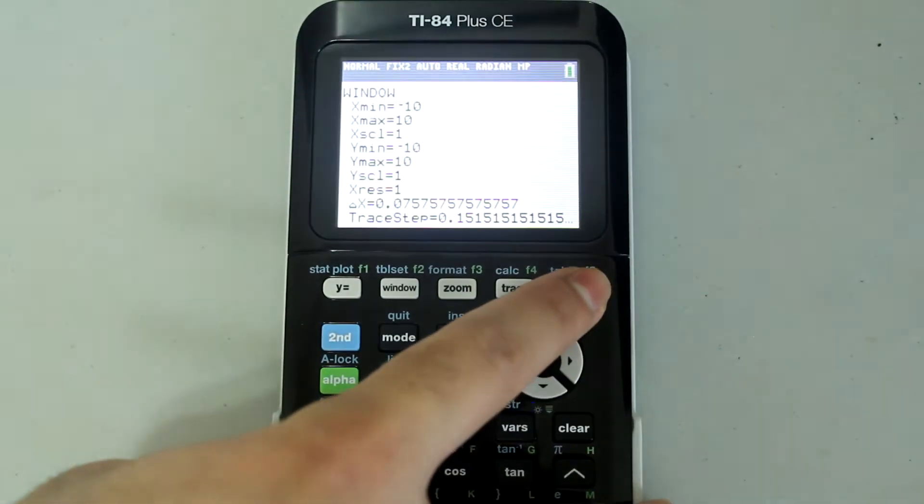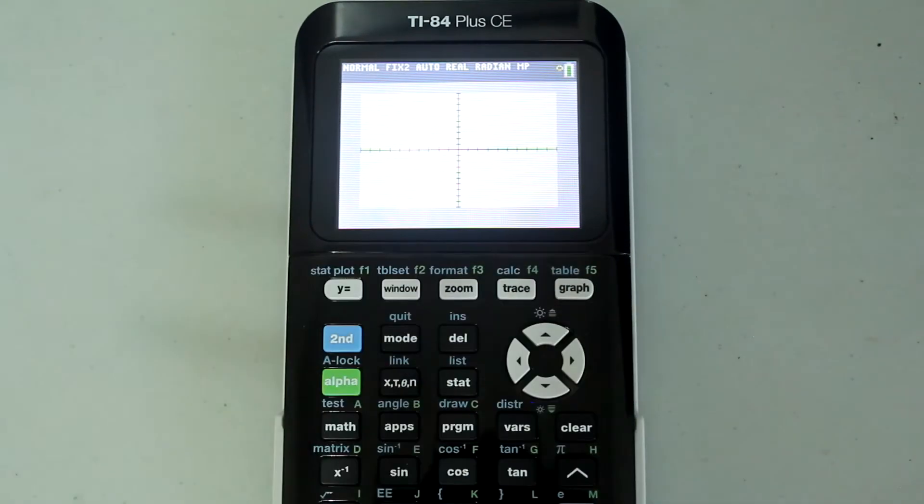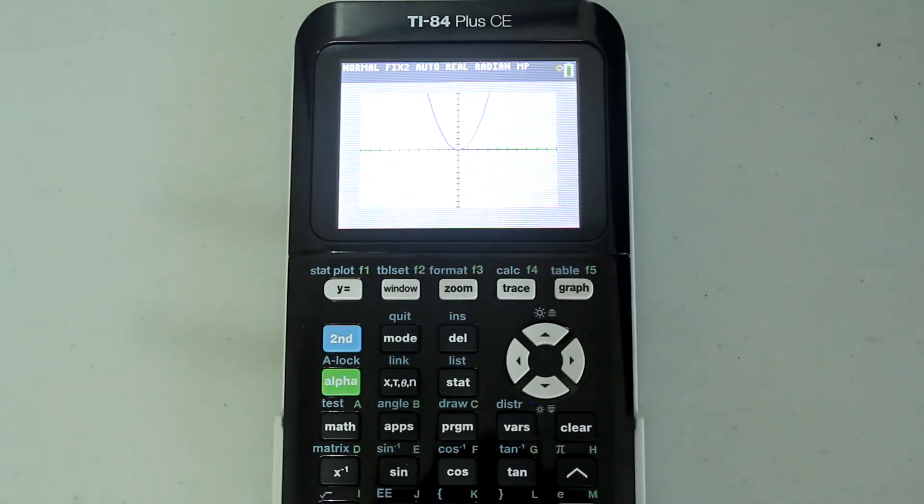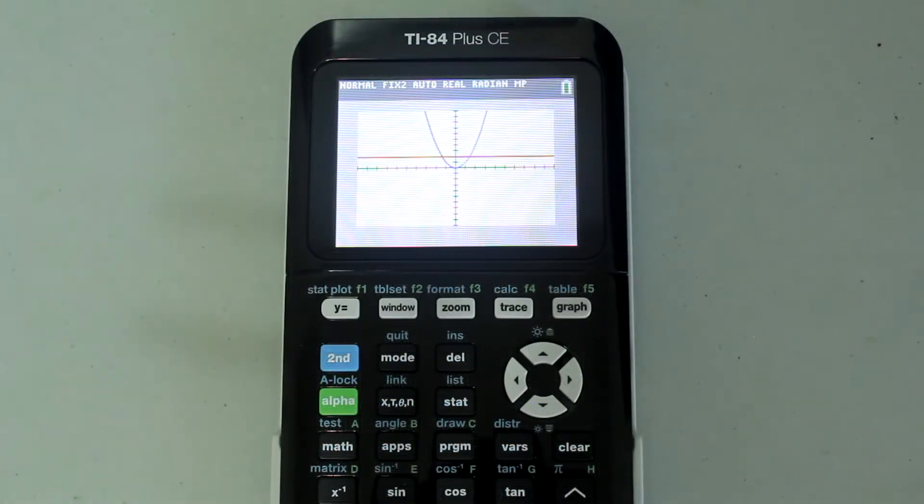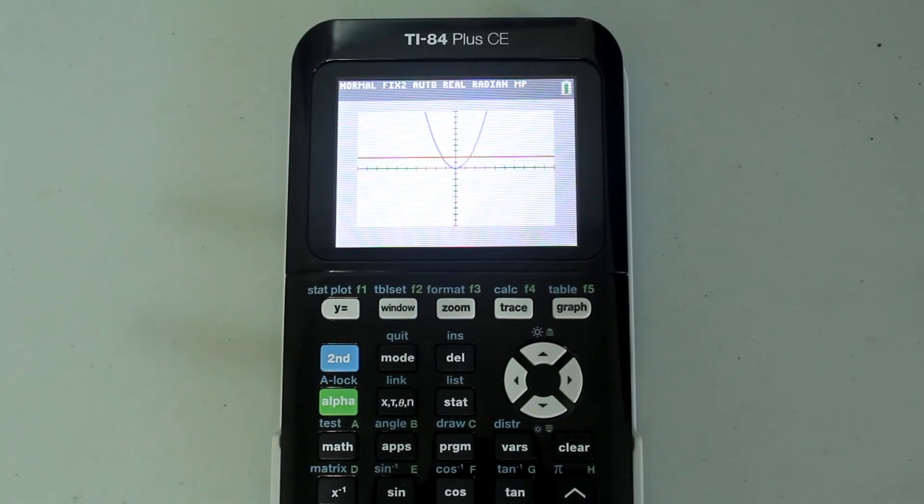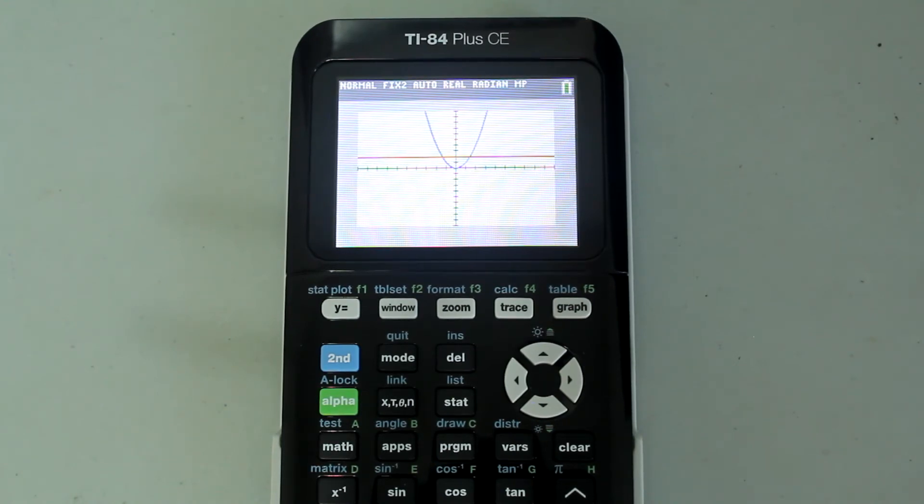And now graph, and I get the graphs of x squared and y equals 2. While we are talking about the graphing window, let's discuss other components for the graphing window settings.